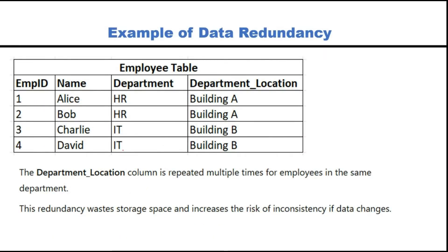We are considering an employee table. In this employee table there are four attributes: employee ID, name, department, and department location. Can anybody identify the redundancy in this table? We can easily see that the values 'Building A' and 'Building A' are repeated. In actual databases, tables are much larger, so this duplication causes data redundancy. When data is repeated and duplicated, this is called data redundancy.